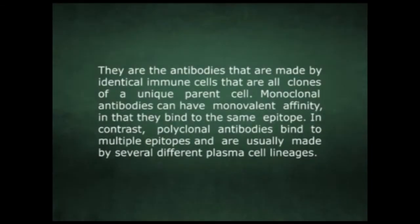Coming to monoclonal antibodies, they are antibodies made by identical immune cells that are all clones of a unique parent cell. Monoclonal antibodies can have monovalent affinity, meaning they bind to the same epitope. In contrast, polyclonal antibodies bind to multiple epitopes and are usually made by several different plasma cell lineages.